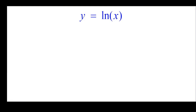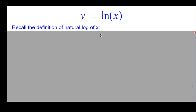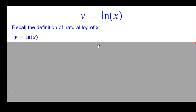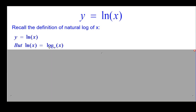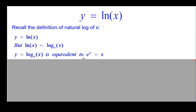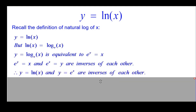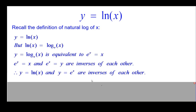So y equals the natural log of x. First of all, we are going to recall the definition of what we mean by the natural log of a number. Natural log is the log to the base e, which is about 2.7, of x. Keep in mind that we can rewrite this log equation as an exponential — the base raised to the y is equal to x. So e to the y equals x, and e to the x equals y are inverses of each other, interchanging the x and y's. So natural log and y equals e to the x are inverses of each other.